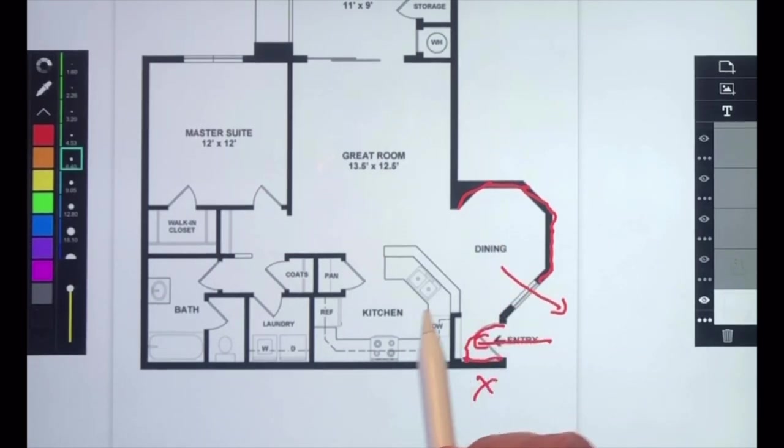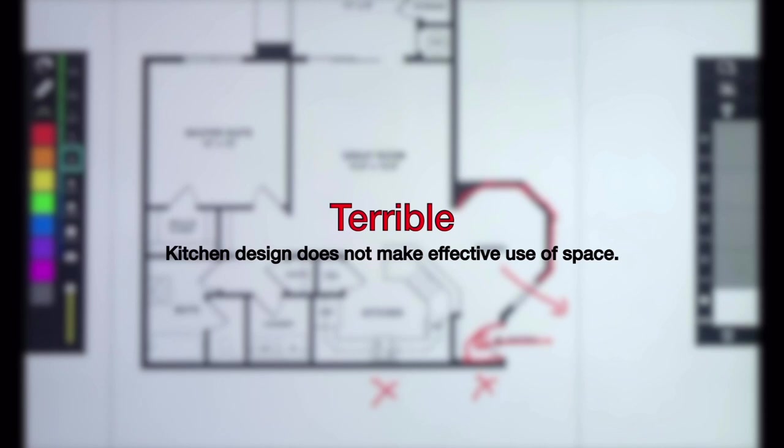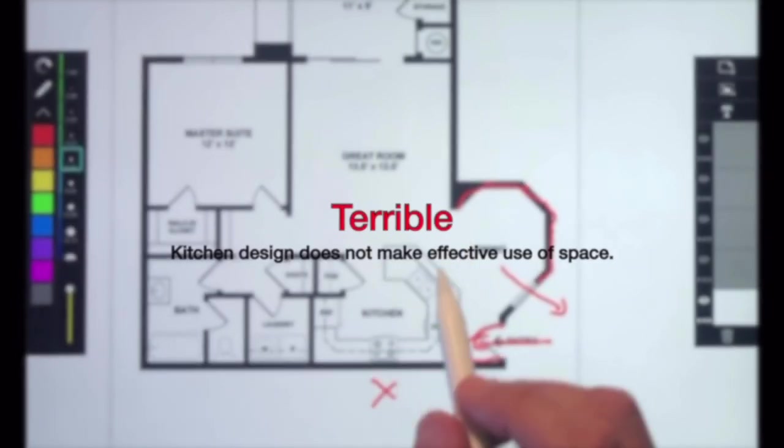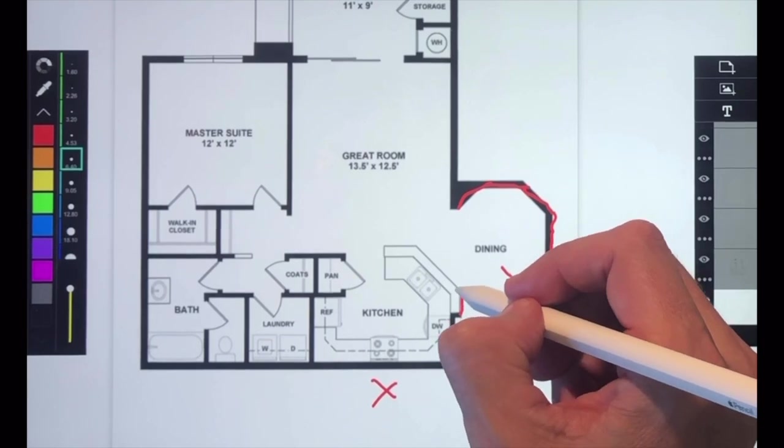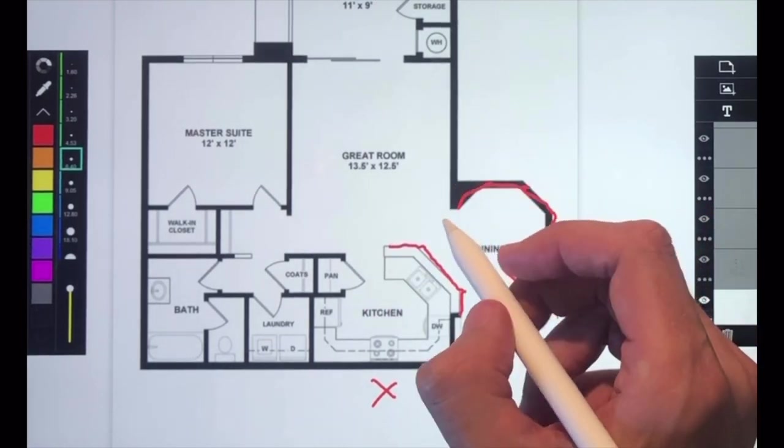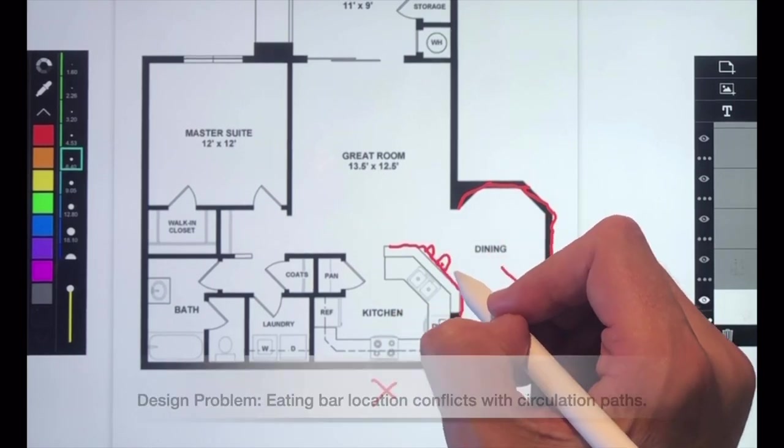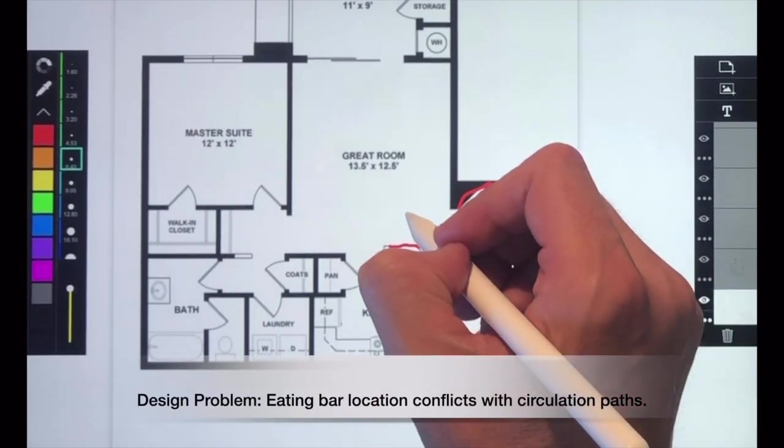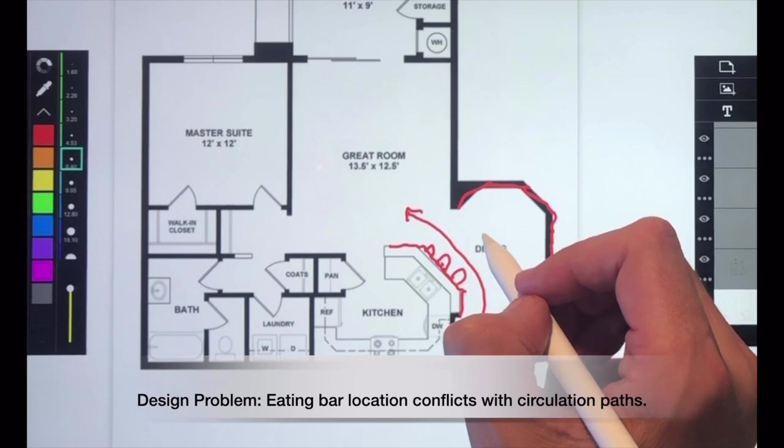The biggest problem with this whole plan has to do with the kitchen. I think this kitchen design is terrible. It is basically the shape of a giant hot tub. I don't know who wants to cook inside of a hot tub. The geometry of the eating bar mimics the geometry of the stop sign shape dining room. The problem is, if you put your stools here, you're basically going to conflict with the circulation path into the rest of the unit.